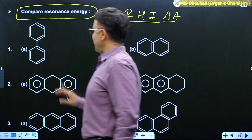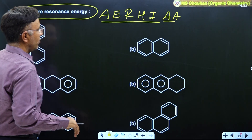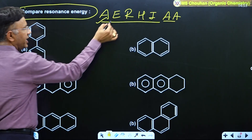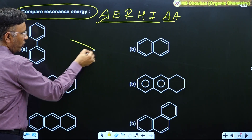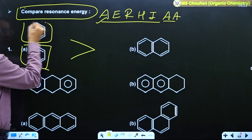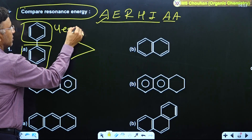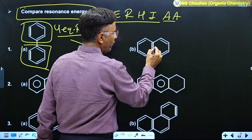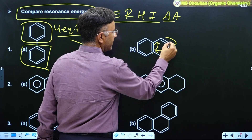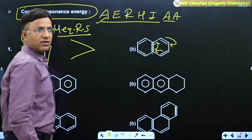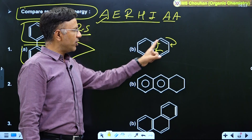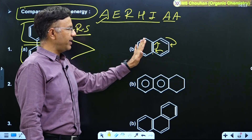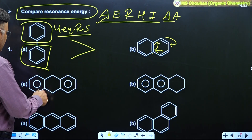Let us discuss: we have to compare resonance energy of A and B. First, check whether each is aromatic — both are aromatic. Second, check equivalent RS: biphenyl has 4 equivalent RS, while in naphthalene the RS are not equivalent. If the pi bond moves to the right-hand side position in naphthalene, one ring becomes an individual benzene but the other acquires anti-aromatic character. So biphenyl has more resonance energy.